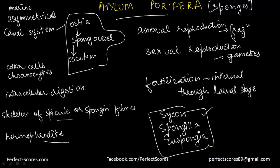That is all for Phylum Porifera. The next phylum we are going to do is Phylum Coelentrata, or Cnidaria, which we will cover in the next video. Thank you so much for watching. Keep revising how the animal kingdom is classified and what the six main factors are.